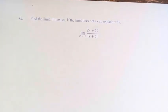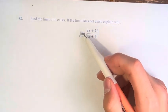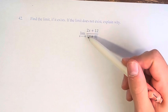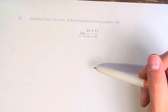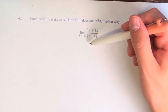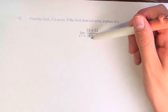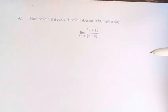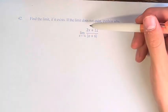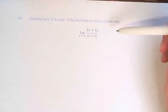Hello, and welcome back to another video. In this problem, we're asked to find the limit if it exists, and if the limit does not exist, explain why. And we have the limit as x approaches negative 6 of 2x plus 12 over the absolute value of x plus 6. So we have this absolute value, and it's in the denominator, so we have to worry about it being equal to 0. We have to consider values being inside the absolute value being positive or negative.